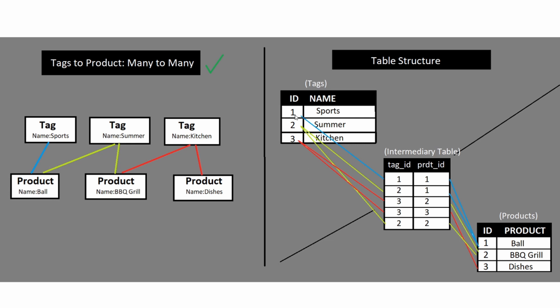When we move to 'summer', we grab the tag ID of 2 and say that's also related to ball — so we grab ball and put it right here: two and one. That's how an intermediary table works between the two tables to actually create that relationship. So that explains the concept of how one-to-many relationships work and many-to-many relationships work.